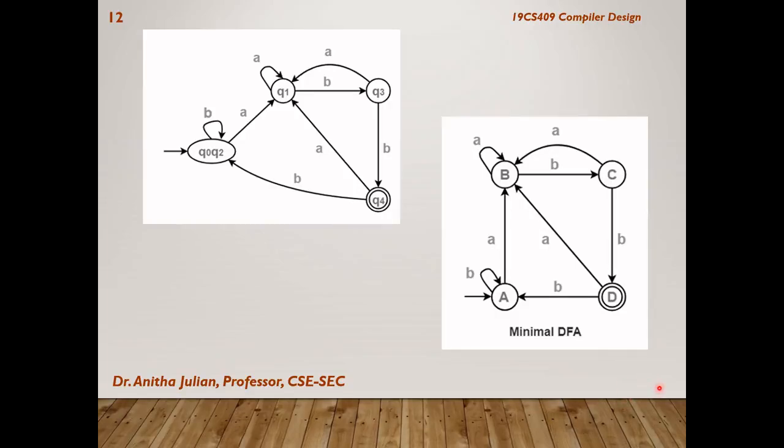If the problem is asked in the exam, try to explain the algorithm clearly and then step by step it has to be shown. Step 1 is to find out the unreachable states and if it is there, we have to remove it. In step 2, we have to redraw the DFA in case there have been unreachable states and we have removed them. The DFA has to be redrawn. And after redrawing, we will write the transition table for this new DFA.